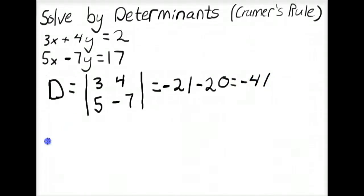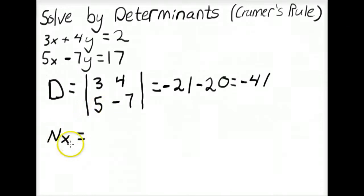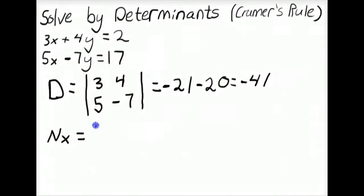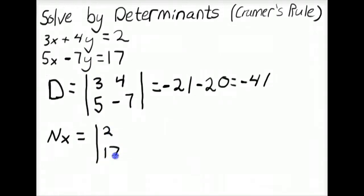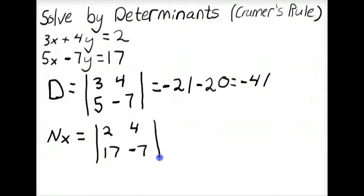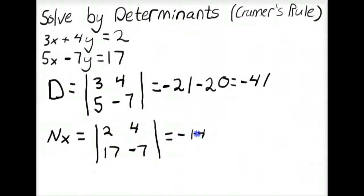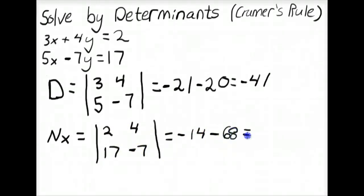Finding the numerator of the X term, we use the same determinant but replace the X coefficients 3 and 5 with C and F, which are 2 and 17, keeping 4 and negative 7 the same. Expanding this determinant: 2 times negative 7 is negative 14, minus 17 times 4 which is 68. So the numerator of X equals negative 82.